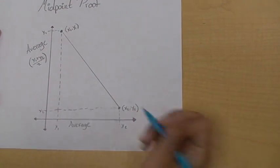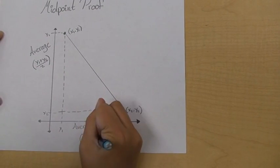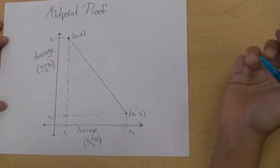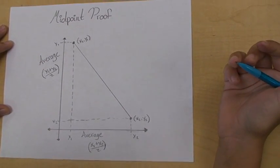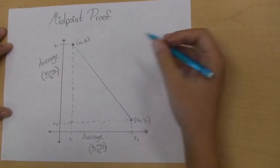And then the x values. The average of the x values is x1 plus x2 divided by two. We then want to represent these average values corresponding to the point on the line between the two points.